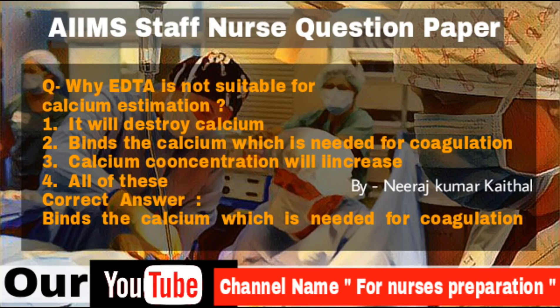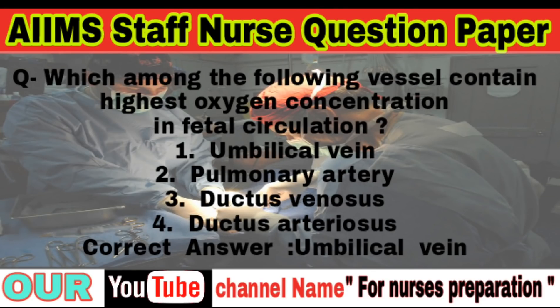Question: Why is EDTA not suitable for calcium estimation? Options: It will destroy calcium, it binds the calcium needed for coagulation, calcium concentration will increase, all of these. Correct answer is it binds the calcium which is needed for coagulation. Question: Which among the following vessels contains the highest oxygen concentration in fetal circulation? Options: Umbilical vein, pulmonary artery, ductus venosus, ductus arteriosus. Correct answer is umbilical vein, which carries oxygenated blood from the placenta into the growing fetus.